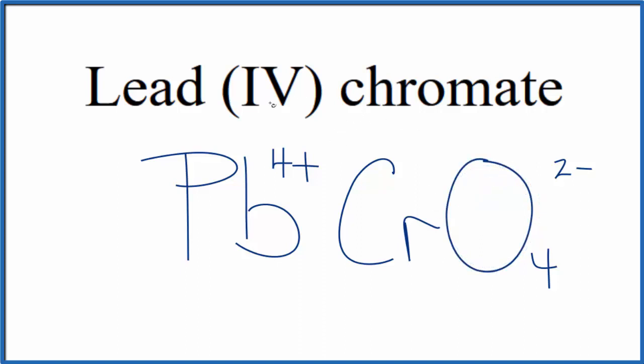So because this lead (IV) chromate is neutral, it doesn't say ion after it, these charges need to add up to zero. We need to have a net charge of zero. In order to do that, we'll need to have two of these chromate ions, because the whole chromate ion here has a 2- ionic charge.